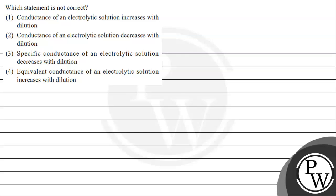Hello children, let us read this question. Which statement is not correct? We have 4 options given. First: conductance of an electrolytic solution increases with dilution. Second: conductance of an electrolytic solution decreases with dilution. Third: specific conductance of an electrolyte solution decreases with dilution. Fourth: equivalent conductance of an electrolytic solution increases with dilution.